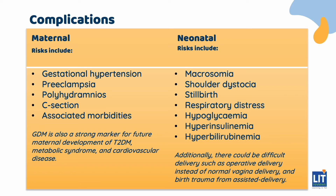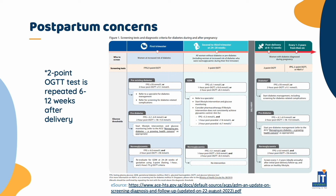As such, the complications of GDM should be managed accordingly with lifestyle and/or pharmacological interventions by the multidisciplinary team. For postpartum concerns, GDM usually does resolve after delivery, but up to 50% of them develop type 2 diabetes later in life. Thus, the 2-hour GTT test is repeated 6-12 weeks after delivery. Patients are subsequently recommended to have an annual glucose tolerance test performed for early detection of type 2 diabetes mellitus.